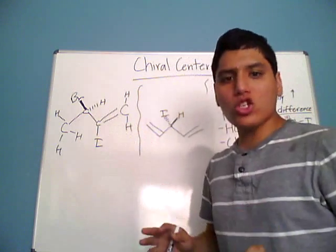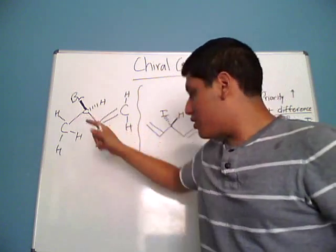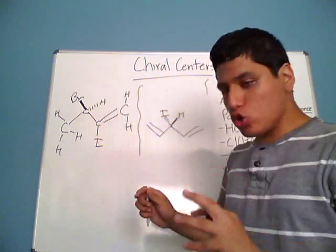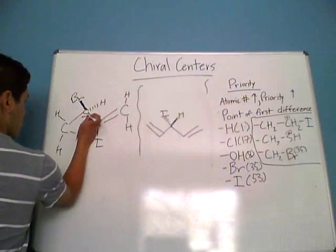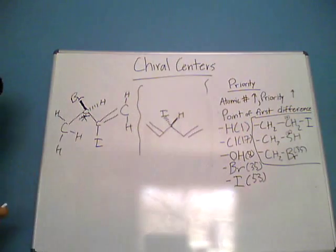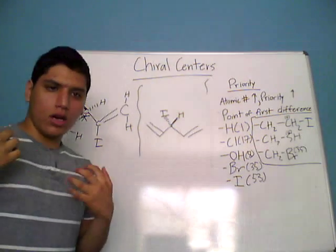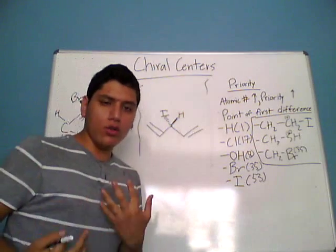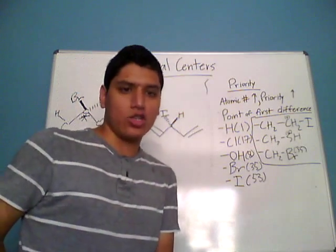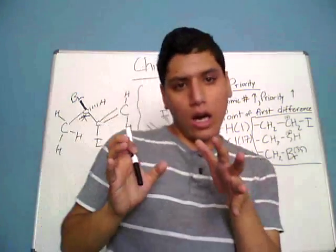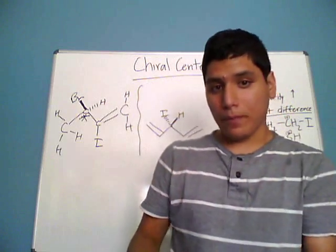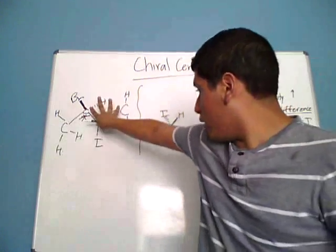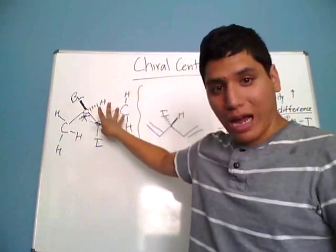To show that a carbon is a chiral center, you draw an asterisk at that position, indicating that the center you found is actually a chiral center.